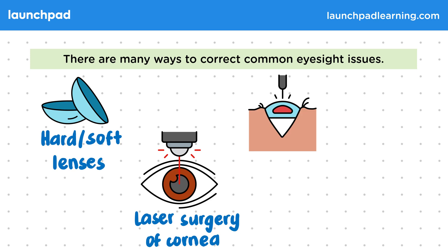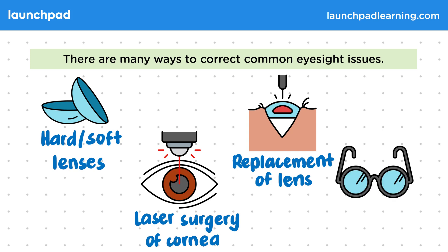Another surgical option would be lens replacement surgery, where the natural lens of the eye is permanently replaced with an artificial lens. And spectacles, also known as glasses, are a traditional way to help refract the light rays more or less as required.